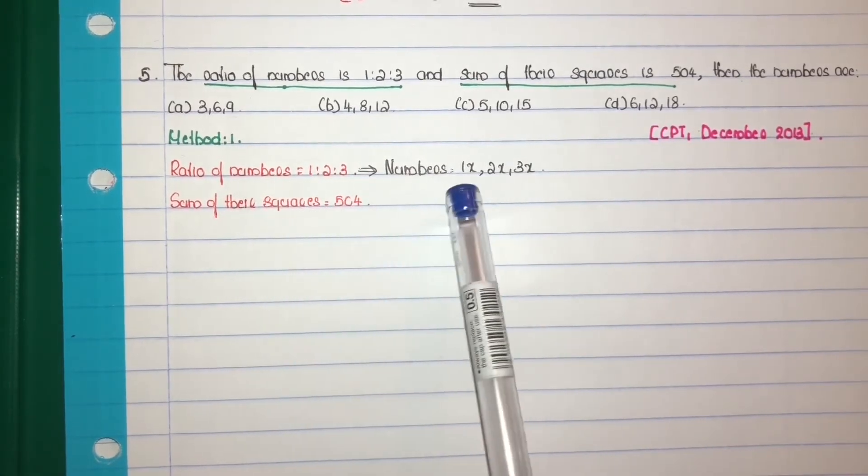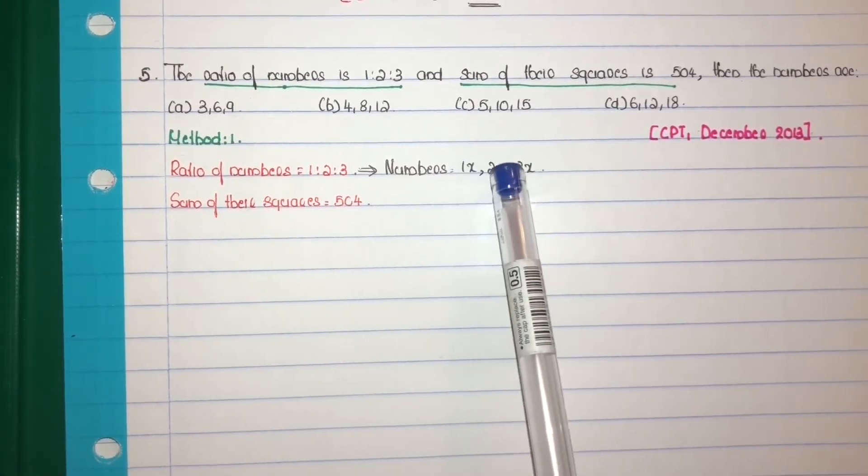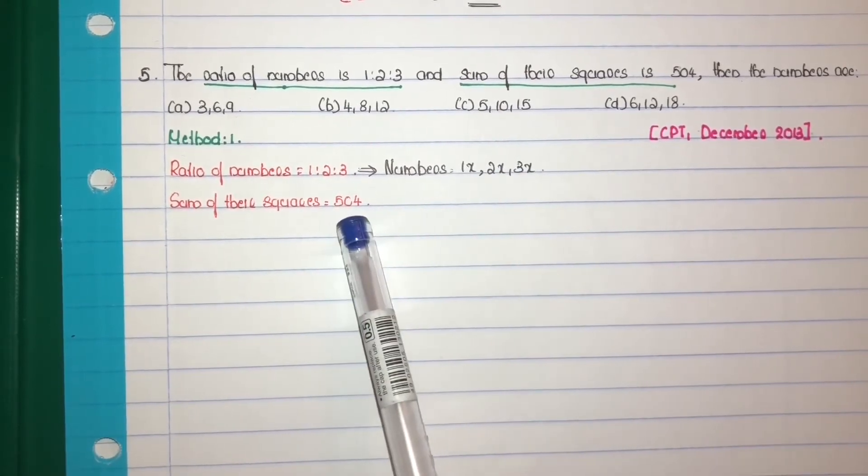So sum of the squares: 1x square plus 2x square plus 3x square equal to 504.